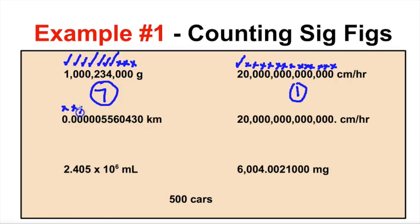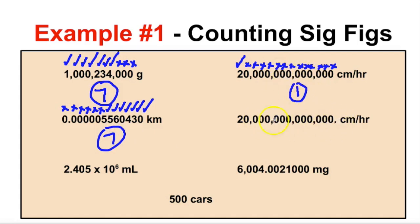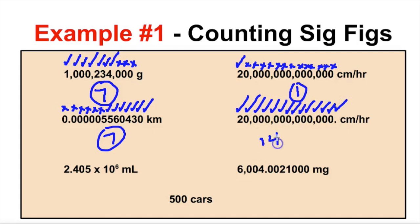For this number with leading zeros: none of the leading zeros count — they never count. The five, five, six are significant, the captive zero counts, the four and three count, and this trailing zero now counts because there's a decimal in the number. Counting all: one, two, three, four, five, six, seven sig figs. The next number is the same but has a decimal, so all zeros are now significant. With two significant digits and all trailing zeros counting, we get 14 sig figs.